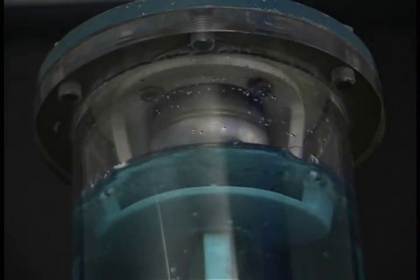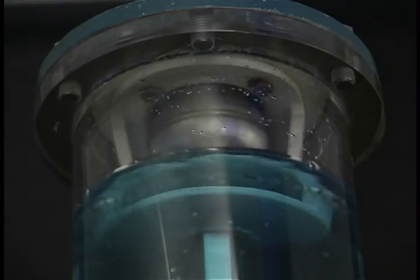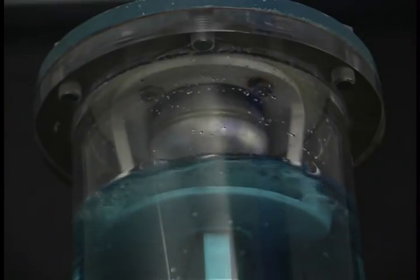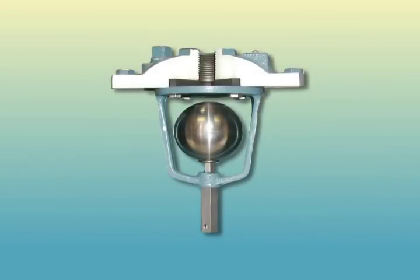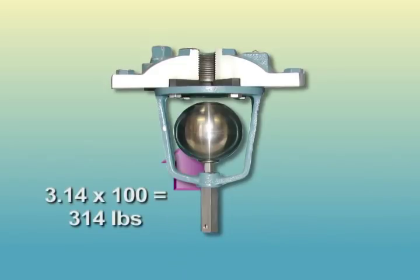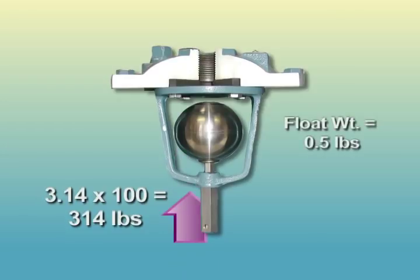Note that as the water recedes, the float stays in the closed position. The float remains in position due to the forces holding it against the seat. This is because forces acting to keep the valve closed are greater than the forces acting to open it. The force is determined by calculating the outlet area times system pressure, which in this case equals 314 pounds of force. The only force acting to open the valve is the weight of the float, which here is one half pound. As a result, the valve will not open under system pressure.